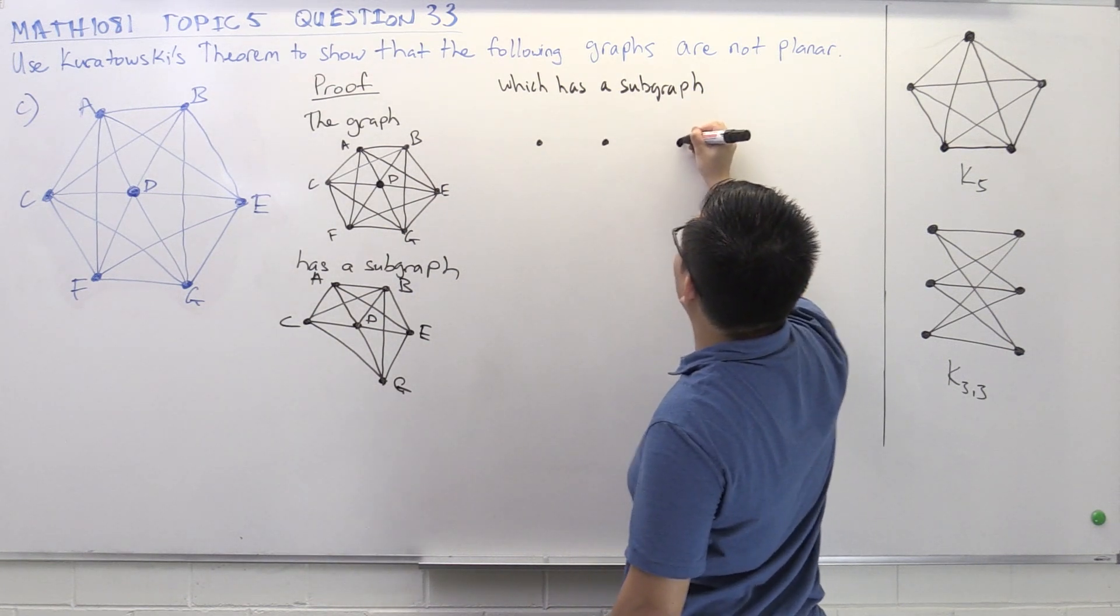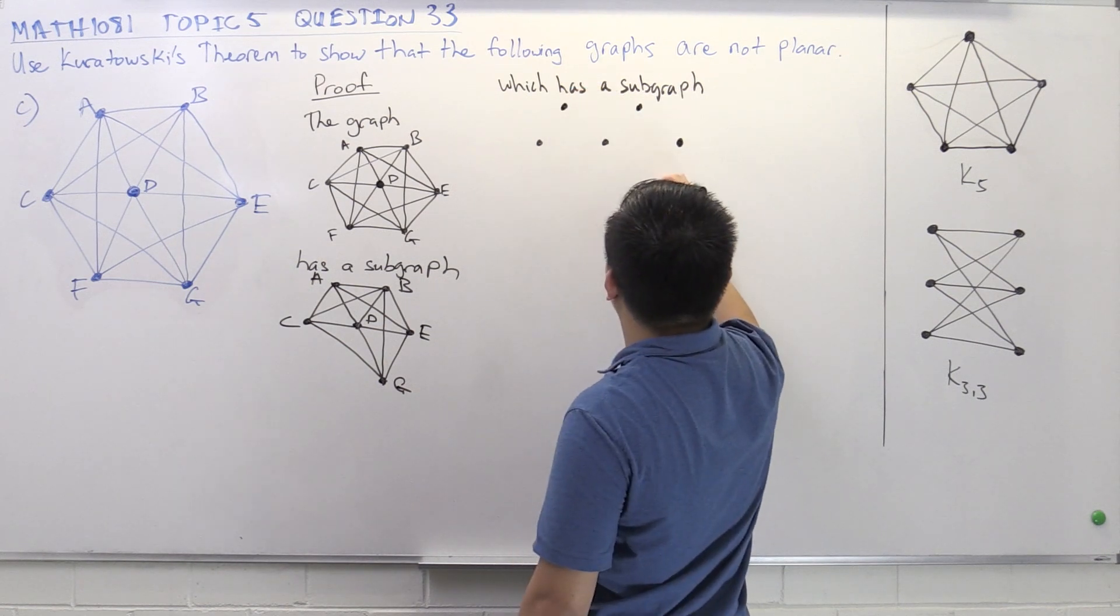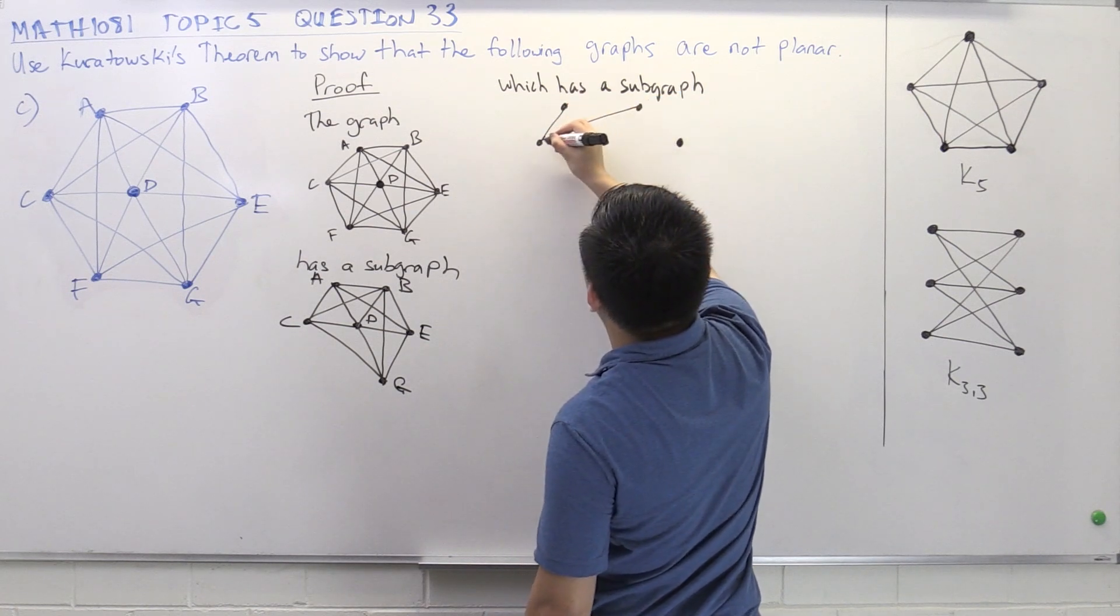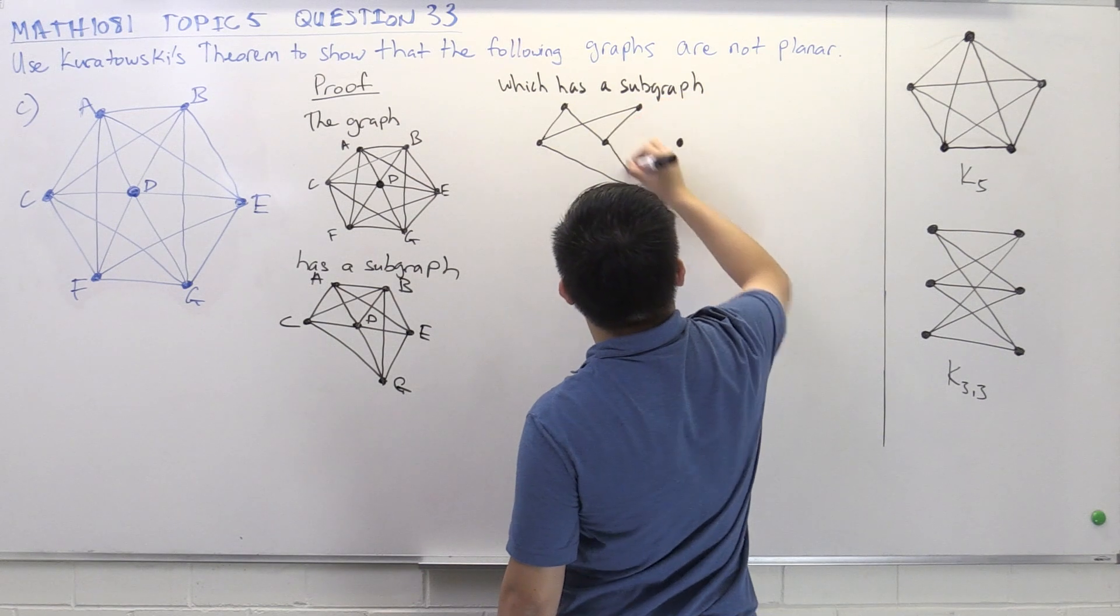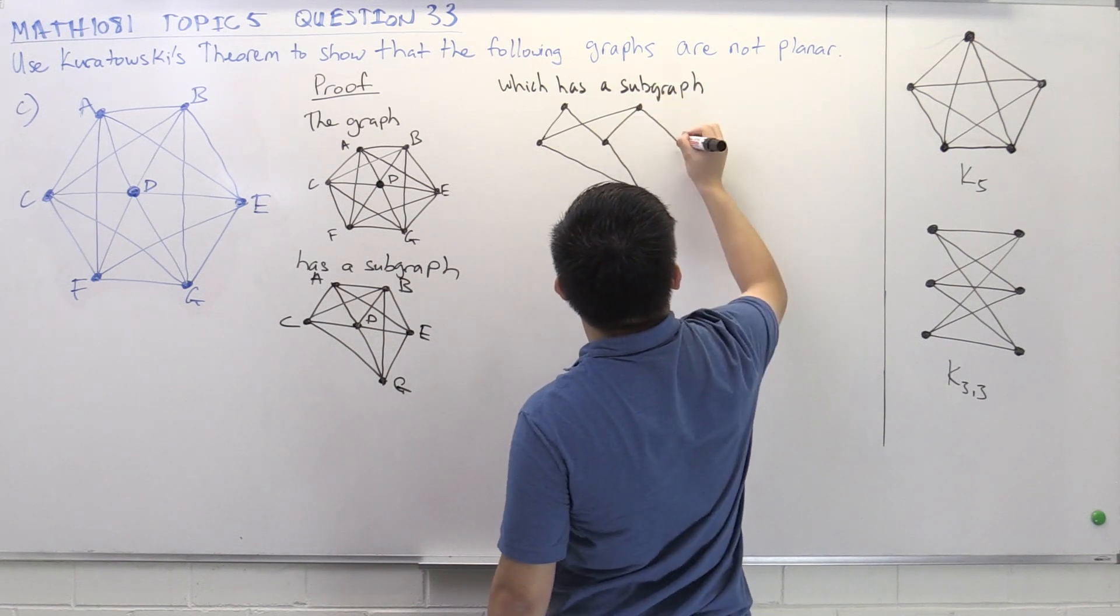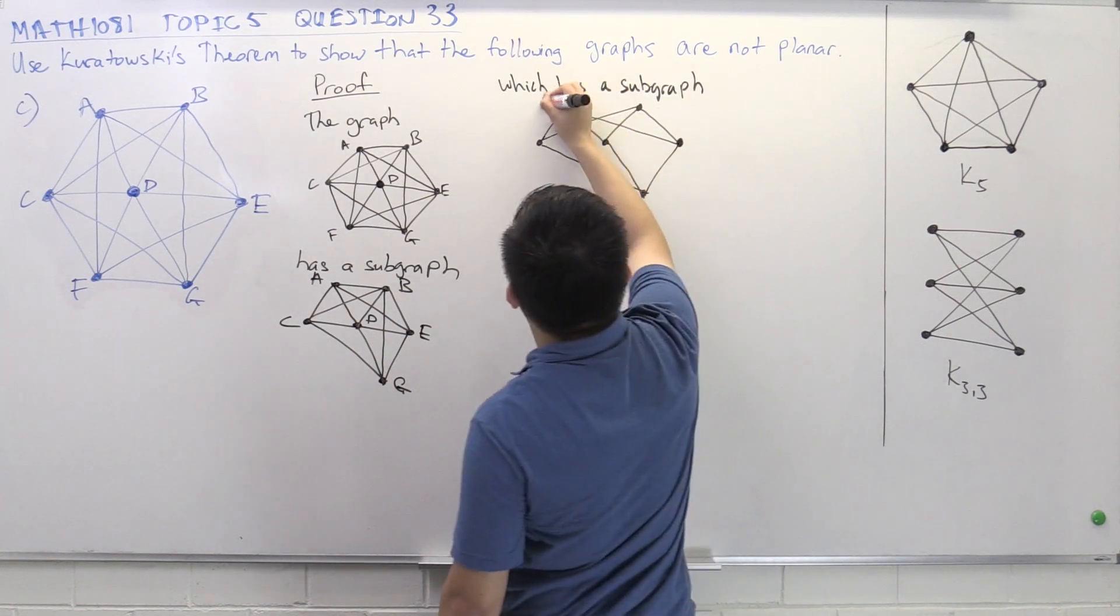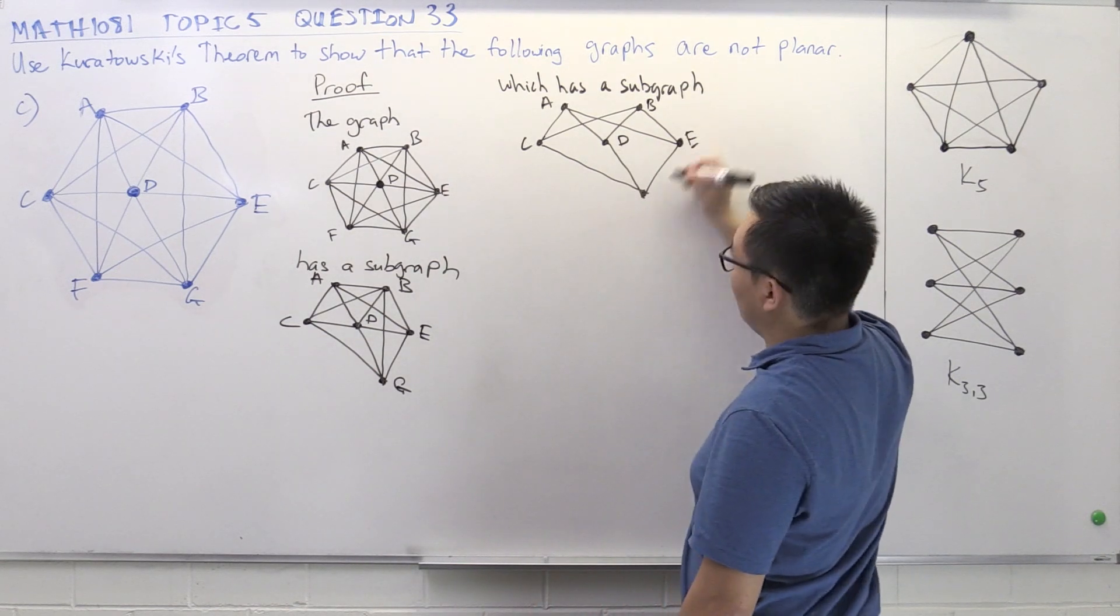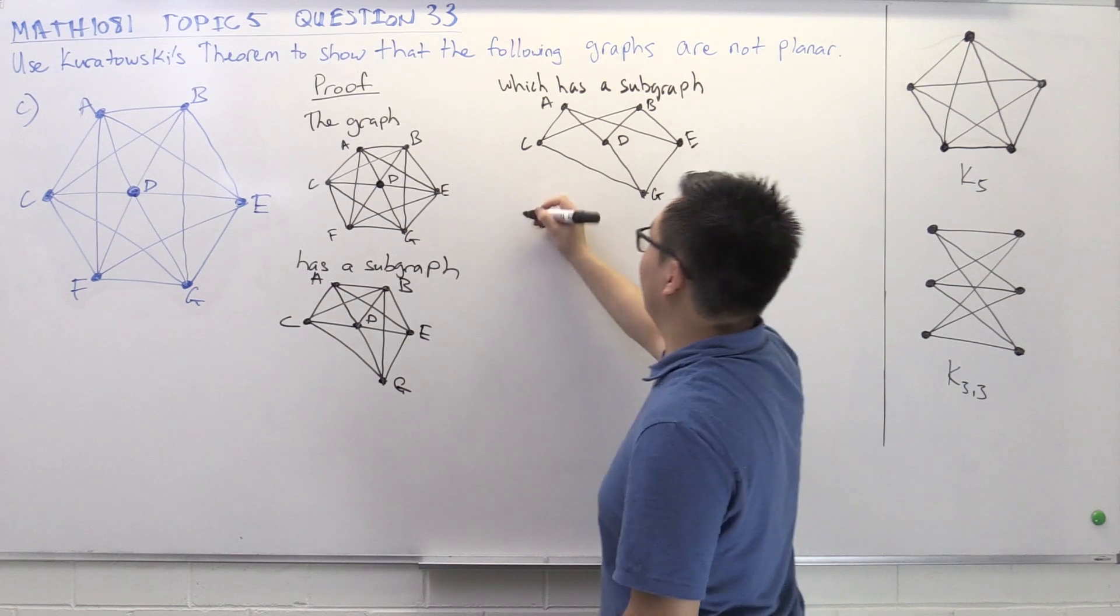So just drawing the vertices first. I already know, from my rough working, which ones are on which side of the bipartite graph. So I'm just going to add in the edges systematically. And label. So A, B, C, D, E, and G.